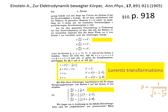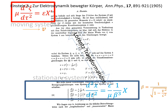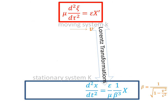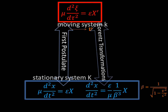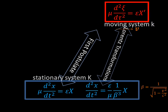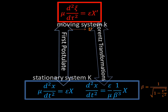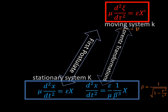On the other hand, on page 918, Einstein shows how Newton's second law in the moving system — shown in the red ellipse — is represented in the stationary system — shown in the blue ellipse — if Lorentz transformations are used for such representation. We are now ready to place back-to-back in the stationary system the results from the two representations of Newton's second law written in the moving system.